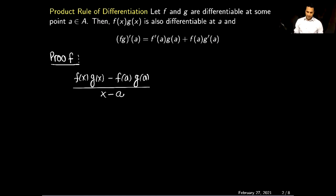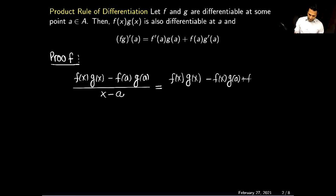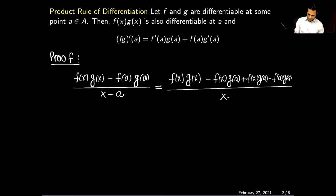Before I calculate the limit, I am going to do some manipulation in that quotient. I will rewrite this quotient by subtracting a term f(x) times g(a) and then also adding the same term, plus g(a), and then f(a) times g(a), and the whole thing is divided by x minus a.